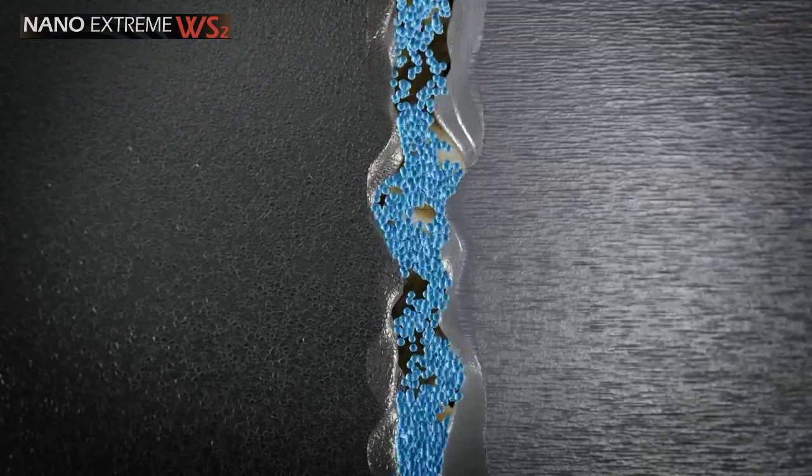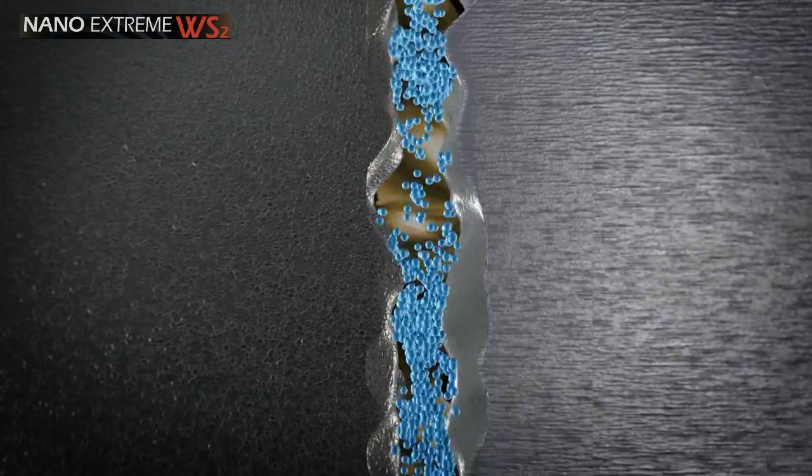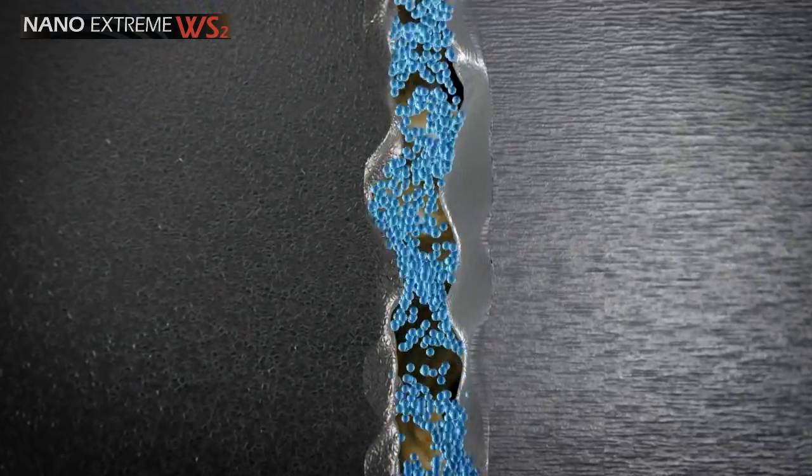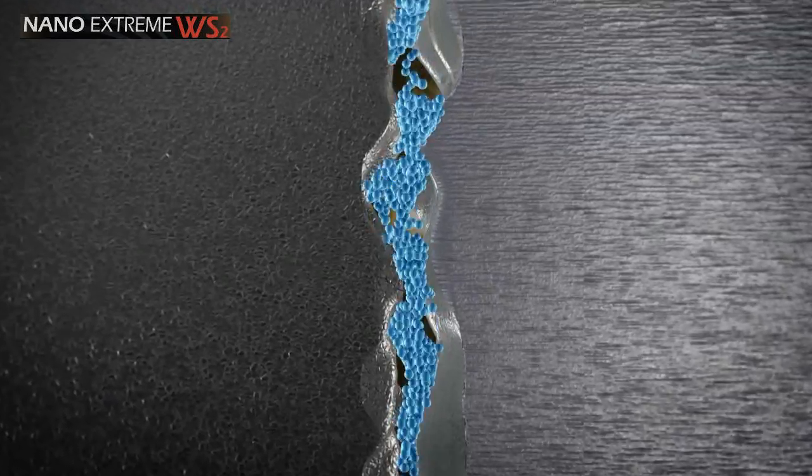Billions of nano-spheres enter the crevices on metal surfaces. Their sub-microscopic diameters allow them to refurbish rough surfaces, leaving them smoother.